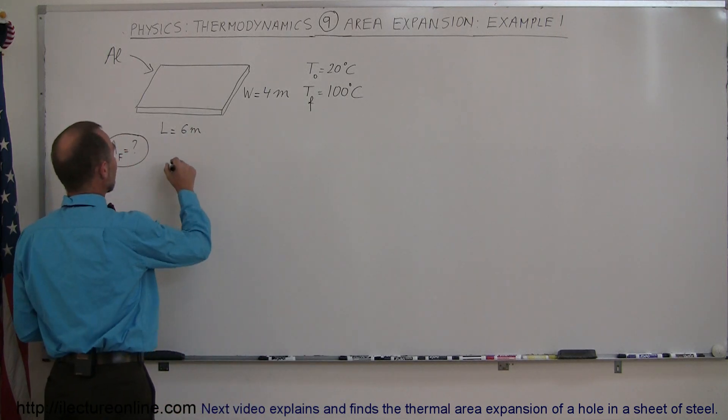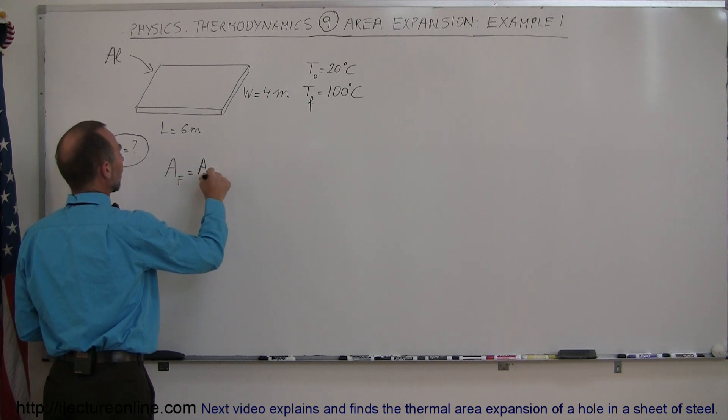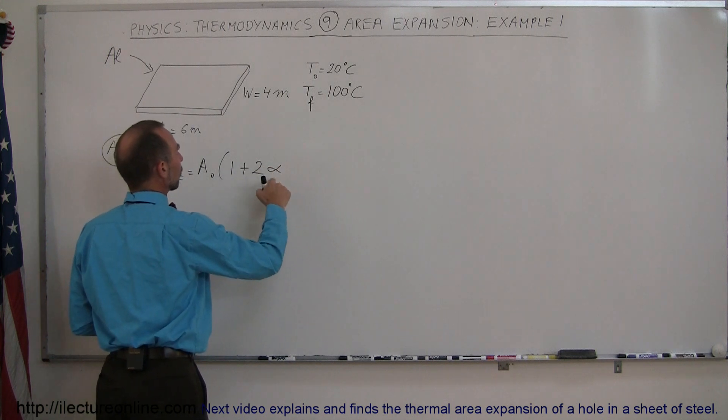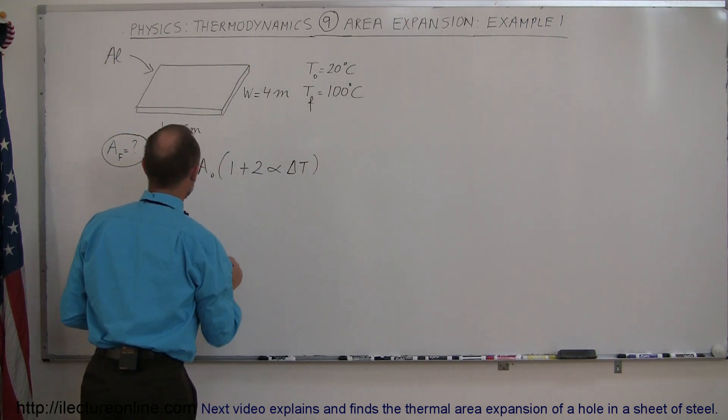Now what we discovered was that the equation says that the final area equals the initial area times 1 plus 2 times the linear coefficient of expansion times delta t. Alright, let's see what that's equal to.